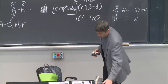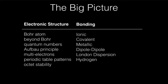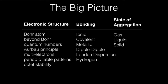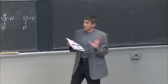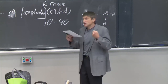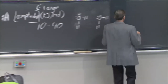Here's the big picture: we have done the electronic structure of atoms and molecules — the Bohr atom, atomic model, quantum numbers, going from one electron to many, octet stability, Lewis and VSEPR. We've also talked about how molecules come together: dipole-dipole, London dispersion, hydrogen bonding, and the forms of aggregation — gas, liquid, and solid. Now we're going to take those orbitals and make solids out of them.